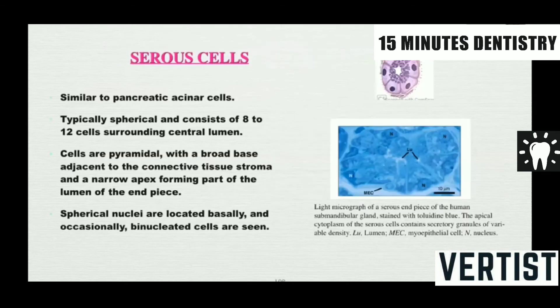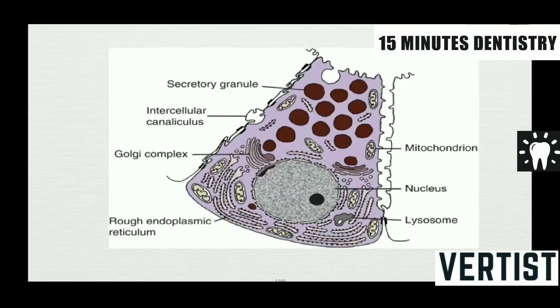Serous cells are similar to pancreatic acinar cells. They are 8 to 12 in number with a small central lumen. The cells are pyramidal in shape with a broad base adjacent to the connective tissue stroma and a narrow apex forming part of the lumen at the end piece. The spherical nuclei are located basally, and occasionally binucleated cells are seen. Large round to ovoid nuclei are present at the base.